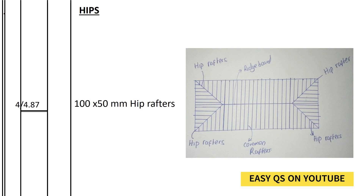Now that we know it will take half the span of the tie beam, that half span forms a right-angled triangle with the rafter as its height and the hip rafter as the hypotenuse. To calculate the hypotenuse we need the height and the base. The height is the length of the rafter, which is 3585, and the base is half the span of the tie beam: 2800 plus 200 plus 300, because the hip rafters go up to the eaves — so the base of the triangle is 3300. We can use Pythagoras' theorem to find the hypotenuse.